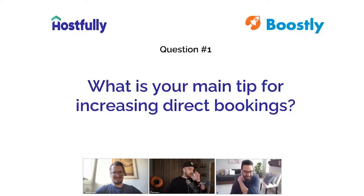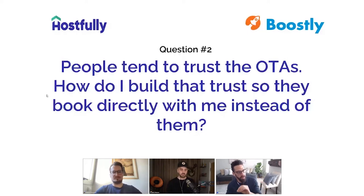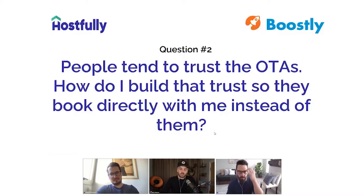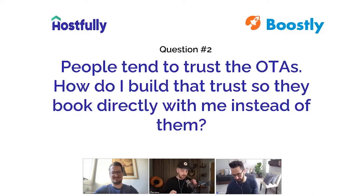Question number two: people tend to trust the OTAs — Airbnb, Vrbo — how do you build trust so that guests book directly with you instead? The OTAs provide just enough information to get the booking, so building those relationships via OTAs is tough. I love this question. It's something I've been talking about on a recent episode of the Boostly podcast, and it ties into what we're doing with our current sponsor, iPrac — a global certification service.